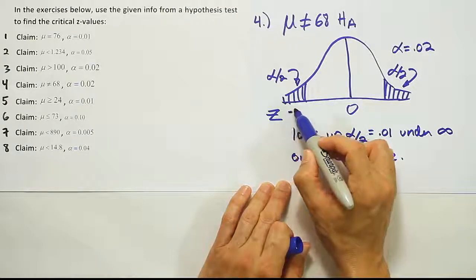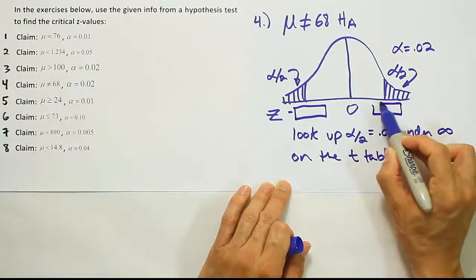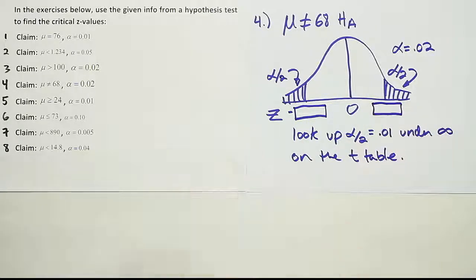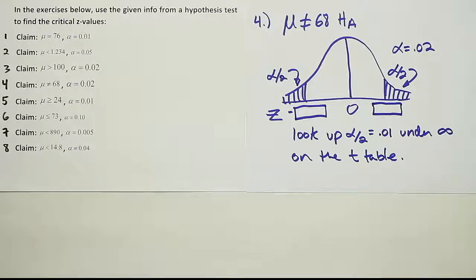We have two of them. One of them will be negative, and the other one will be positive on the right-hand side. It's the same number, just one is negative, one is positive. And we're going to find that by looking up half of alpha under infinity on the t-table. So let's go to the t-table and get that answer now.